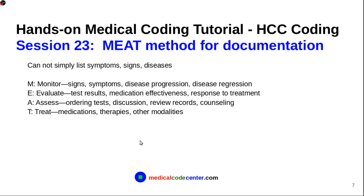The first key factor is the MEAT principle for documentation. You cannot simply list symptoms, signs, and diseases in patient documentation — you have to meet the MEAT conditions. M is for Monitor: monitor signs, symptoms, disease progressions and regressions. E is for Evaluate: test results, medication effectiveness, response to treatment. A is for Assessment: order tests, discuss with other doctors, review records, and counseling. T is for Treatment: medications, therapies, and other modalities. Keep the MEAT principle in mind when doing documentation.